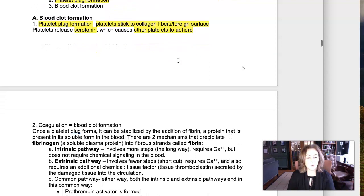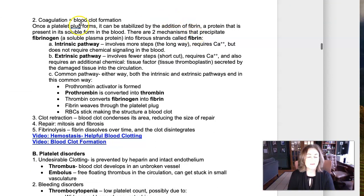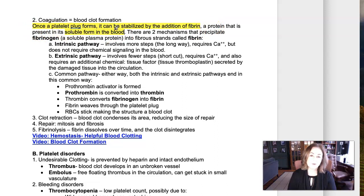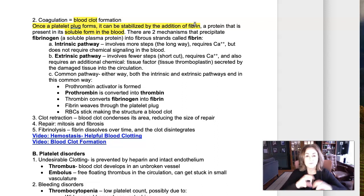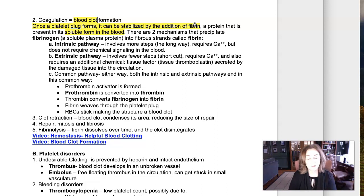The platelet plug, once formed, is stabilized by a protein called fibrin that weaves its way through. Fibrin is always in our blood in a soluble form called fibrinogen. To make a blood clot, the soluble fibrinogen precipitates out of solution and turns into fibrin. Fibrin is very fibrous, weaves through the platelet plug, and strengthens it so much that red blood cells start sticking — and that's what you call a blood clot.